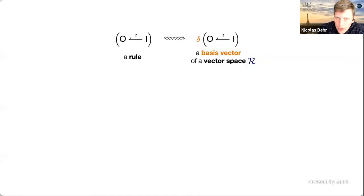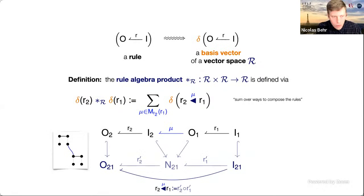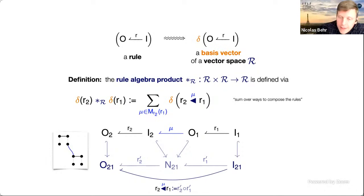Today I give as motivation the rule algebra formalism, which looks at two-step interactions of rules. To do mathematical physics techniques you need a way to reason about the combinatorics of interactions of rules. The idea is to map a rule to a basis vector of a vector space ℛ — indexed by equivalence classes of rules — then define a binary product, the rule algebra product, where the right-hand side ranges over ways of composing rules by partial overlap.